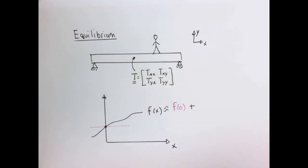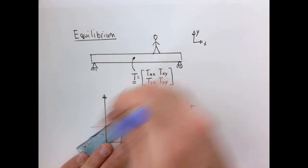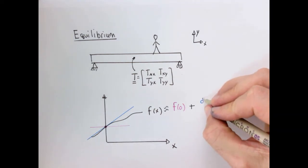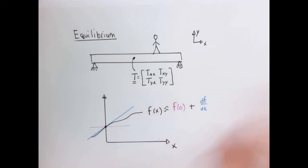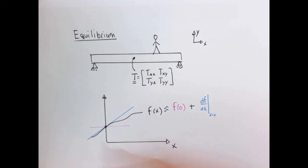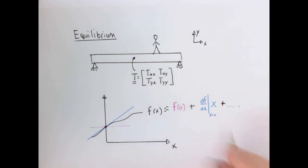So the next thing we could do is add a line. Rather than approximating the function as a constant, we can approximate it as a line. The way to do that is: df/dx is the slope, the derivative of the function with respect to x, evaluated at x equals zero, multiplied by x. The next best approximation would add curvature as well. We can keep going — adding higher and higher derivatives to get a better and better approximation.